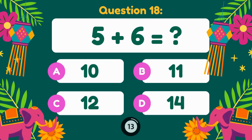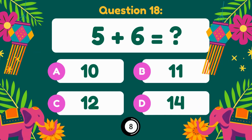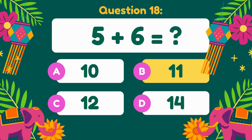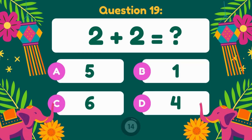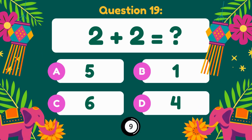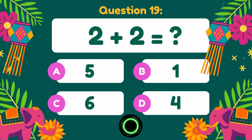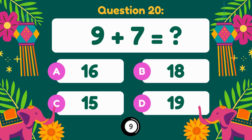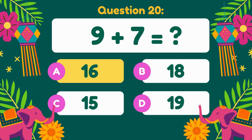5 plus 6 equals. 5 plus 6 is equal to 11. 2 plus 2 equals. 2 plus 2 is equal to 4. 9 plus 7 equals. 9 plus 7 is equal to 16.